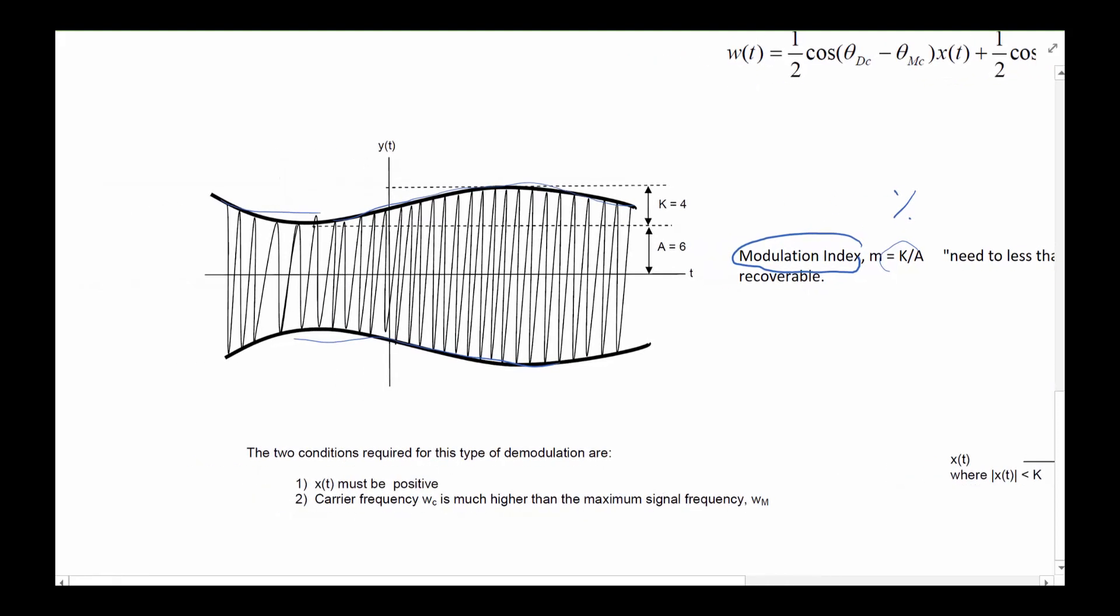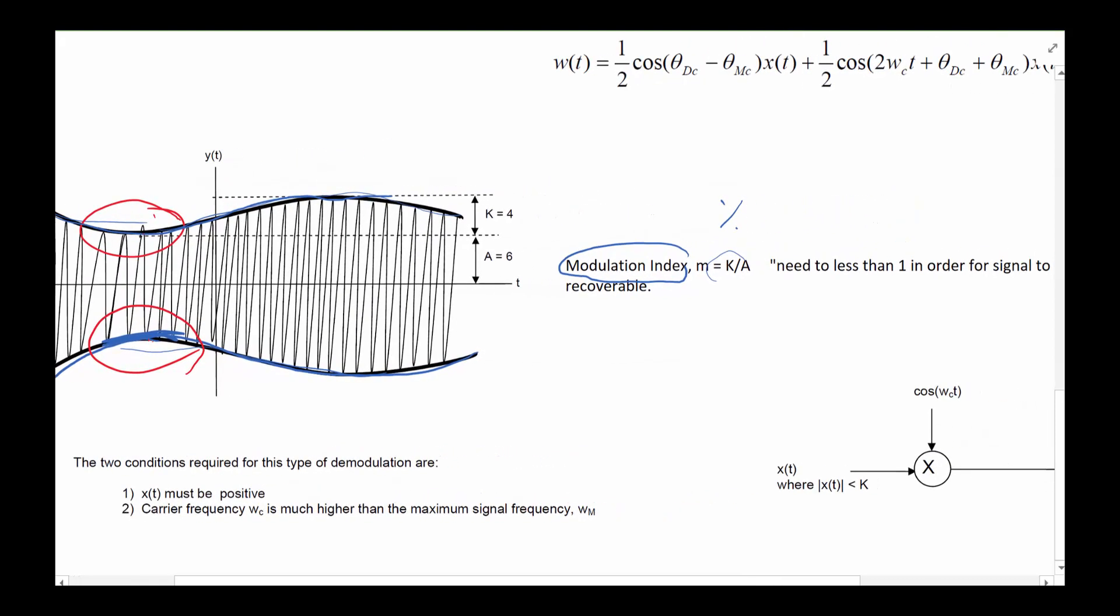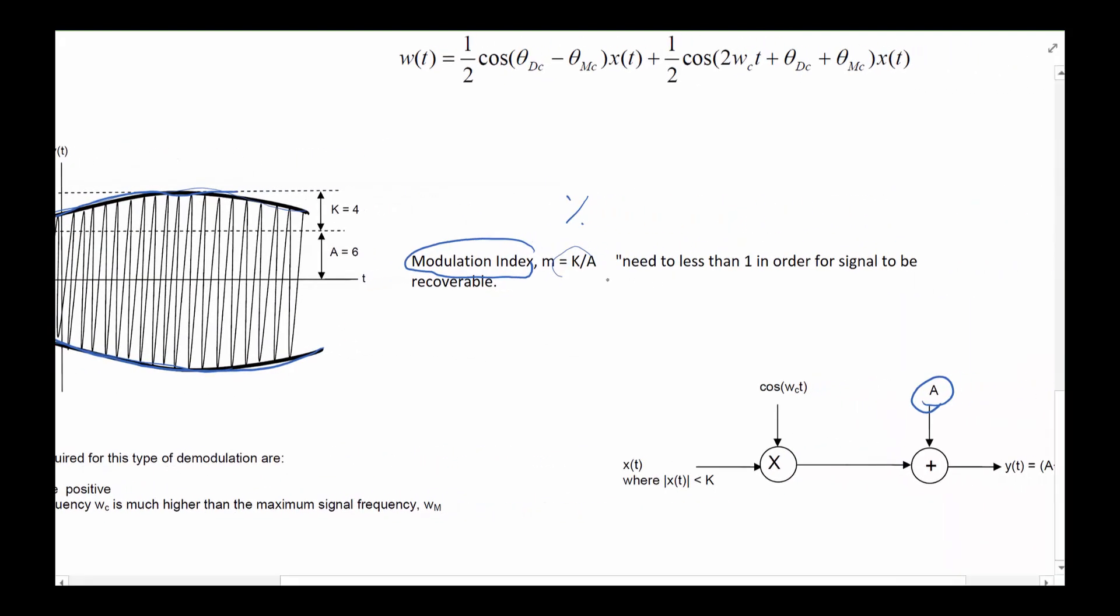So modulation index is 50 or 80 percent. What that basically tells us is that we won't have a chance that the upper one is a signal, our signal, and the lower one is the negative of our signal. But if like this top part here, if this piece ever was really small and k was really big, you would have these guys interfere with each other. So when you recover it you're not going to get the right signal. So as long as you make sure your modulation index is less than one, which means a is much larger than k, then you're in good shape.